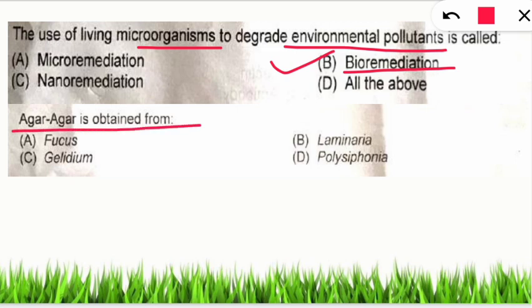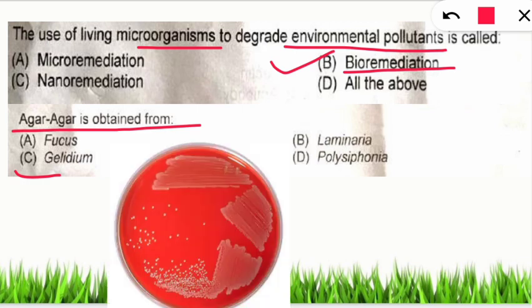Q: Agar agar is obtained from which species? A: Gelidium. Agar (also called agar agar) is a jelly-like substance from the red algae Gelidium species, used to culture bacteria in culture plates and media.